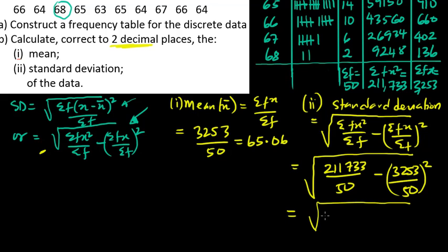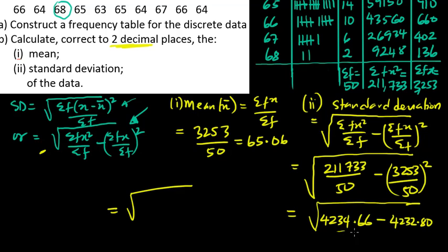3253 divided by 50, all squared, gives 4232.80. Taking the square root of the difference gives 1.36. So the standard deviation for the distribution is 1.36, to two decimal places.